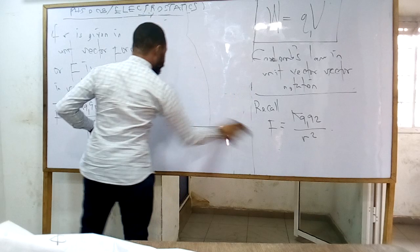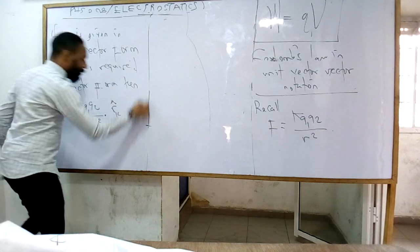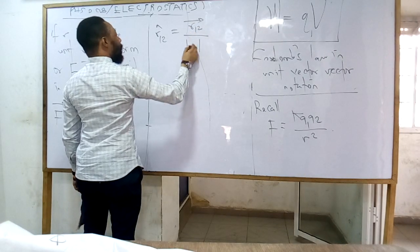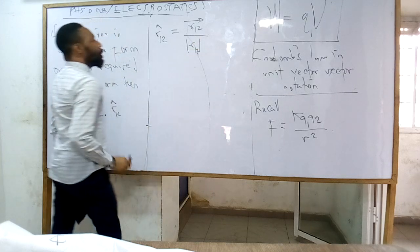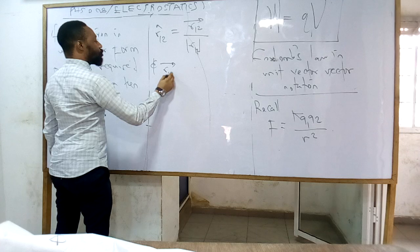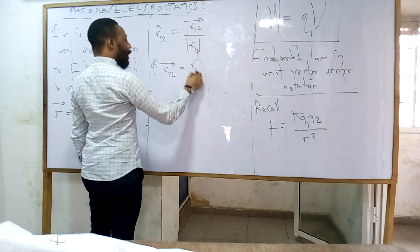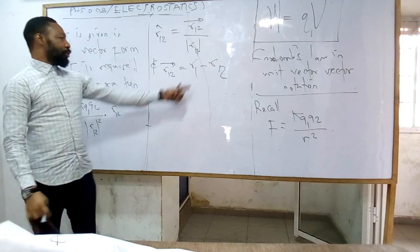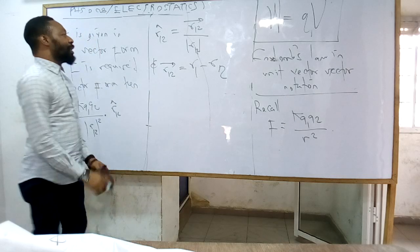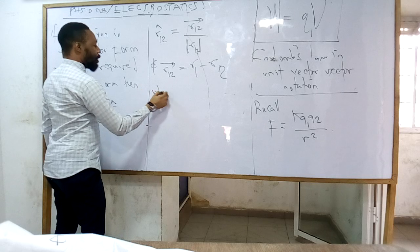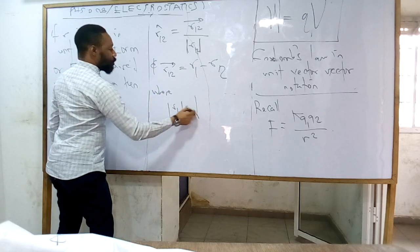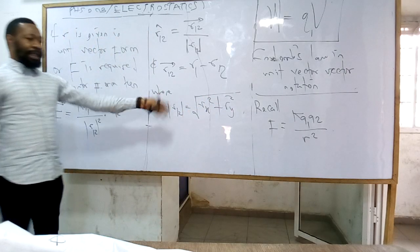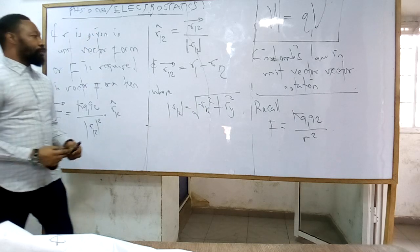The only unit I will introduce is the unit vector R-hat 12. Where R-hat 12 is also vector R12 over magnitude R12. And vector R12 is also R1 minus R2. So the position vector R12 comes from position vectors R1 and R2. The magnitude of R12 is the square root of Rx squared plus Ry squared plus Rz squared.